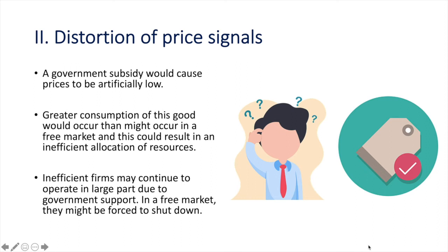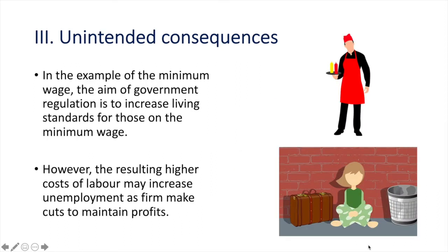Third are unintended consequences. In the example of the minimum wage, the aim of government regulation is to increase living standards for those on the minimum wage. However, the resulting higher costs of labour may increase unemployment as firms make cuts to maintain profits. As a result of well-intentioned policy, the same people the government was trying to help may actually now be worse off.